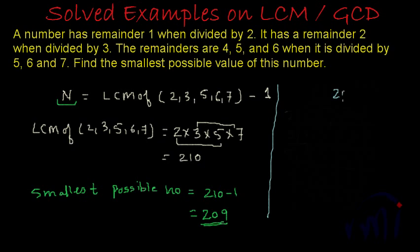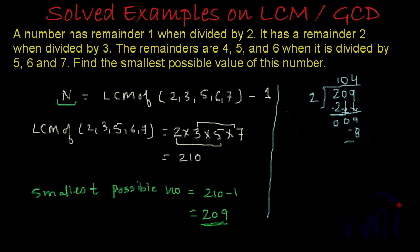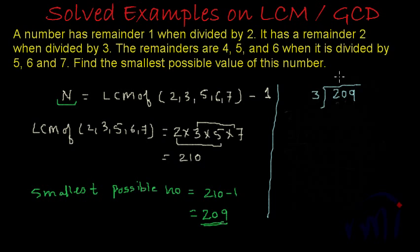Let's verify: if I divide 209 by 2 — 2 ones are 2, bring down 0, bring down 9, 2 fours are 8 — and subtracting, I get 1 as remainder. Similarly, if I divide by 3 — 3 sixes are 18 — bring down the 9, 3 nines are 27, and 29 minus 27 is 2, which is the remainder.